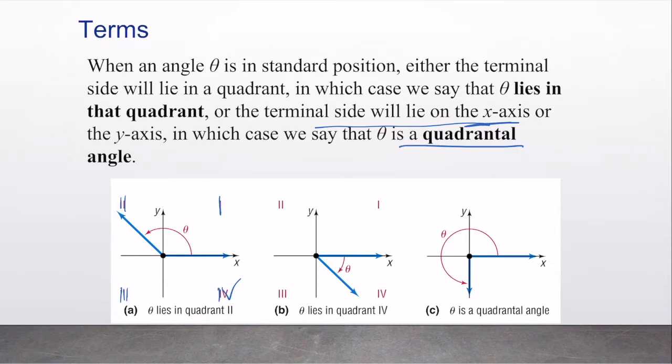In example C, theta is a quadrantal angle, but in example A, our theta lies in quadrant two, and in example B, our theta lies in quadrant four. And remember this is a negative angle, and this is a positive angle.